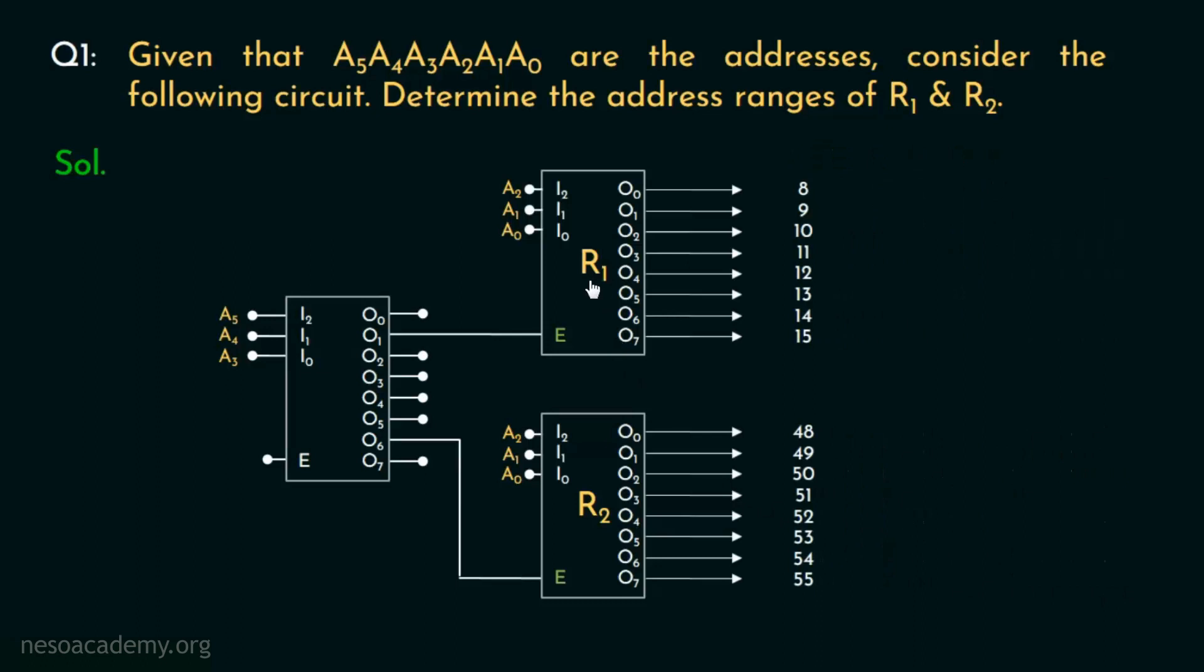Therefore, R1 covers the addresses 8 to 15 and on the contrary, R2 covers 48 to 55, these 8 addresses. So that's it. We could always figure out the address ranges and for that, all we need to do is consider the circuit very minutely. Now let's move on to the next one.